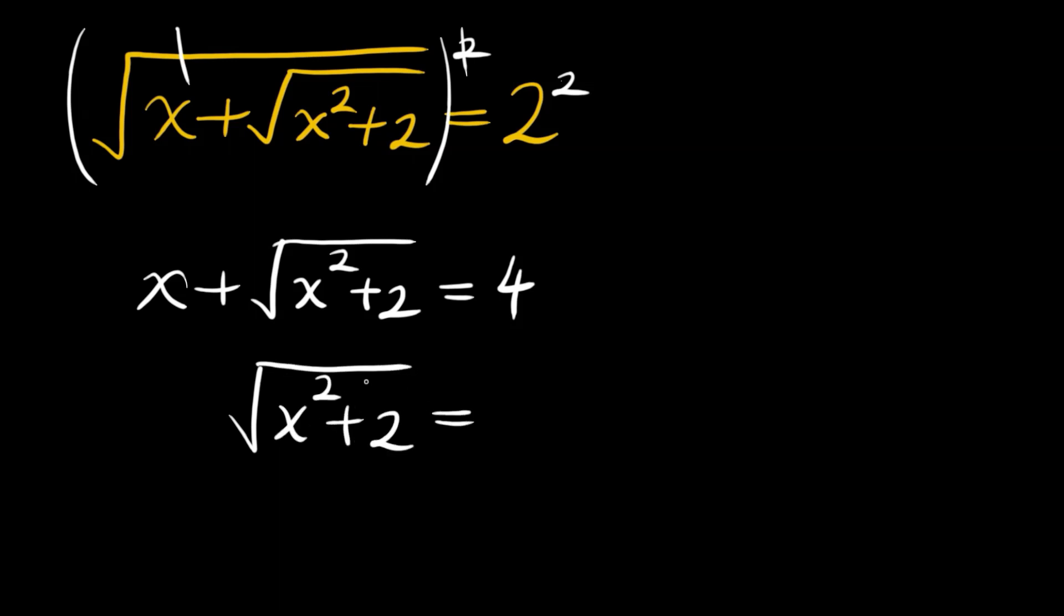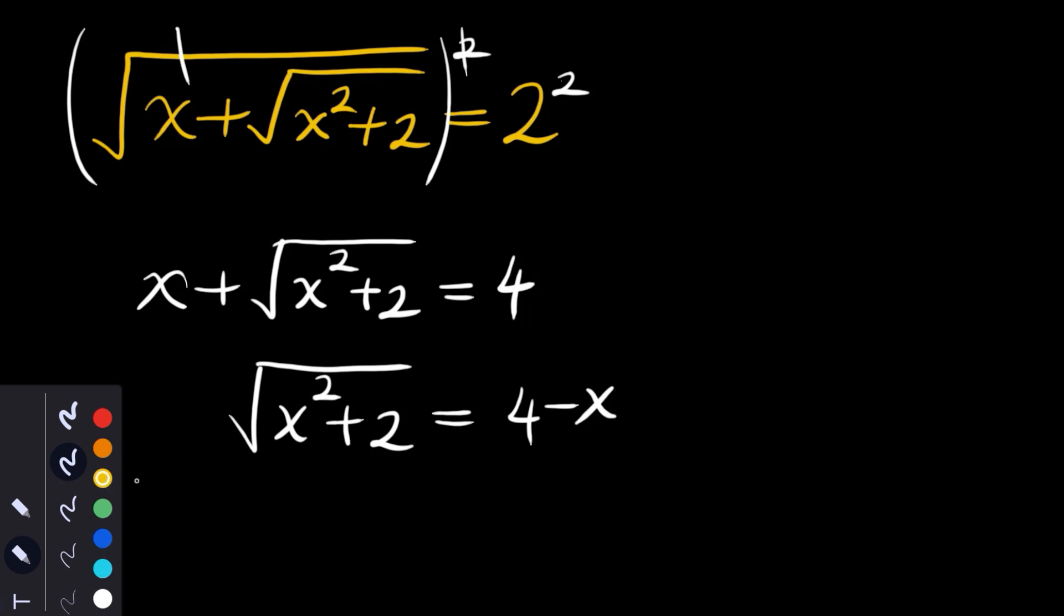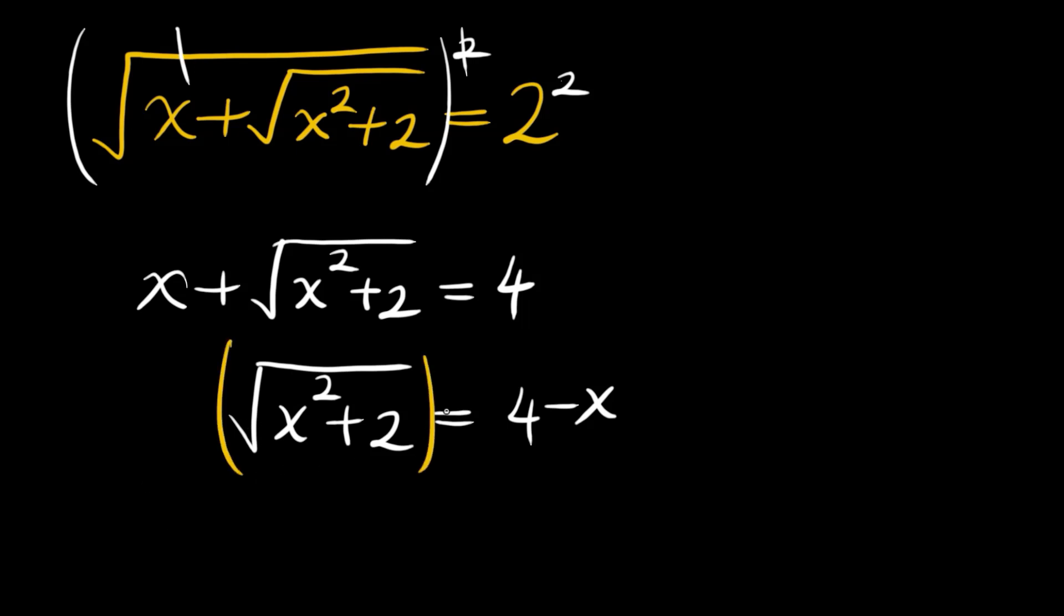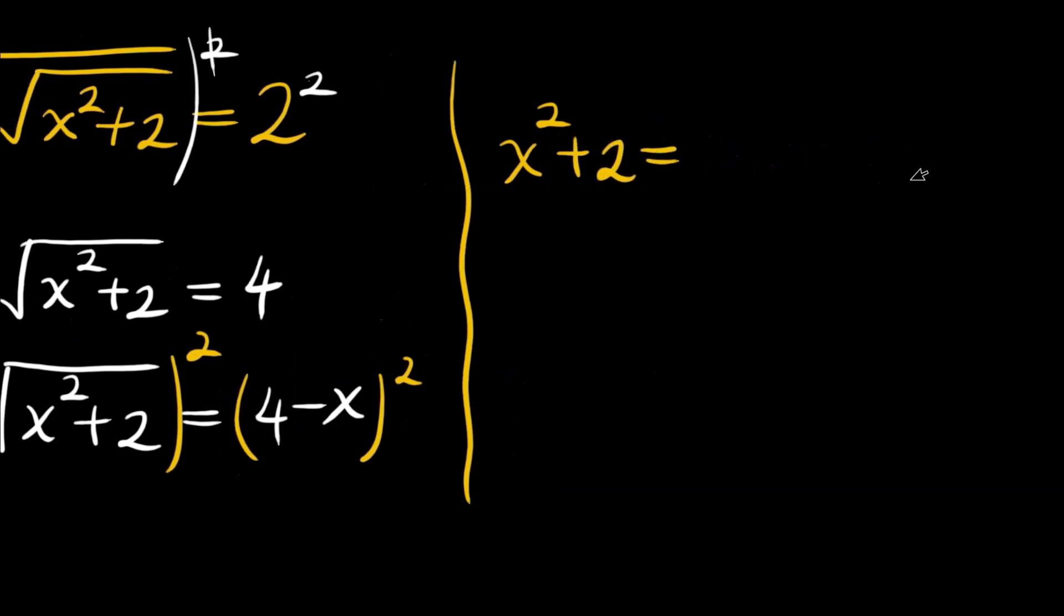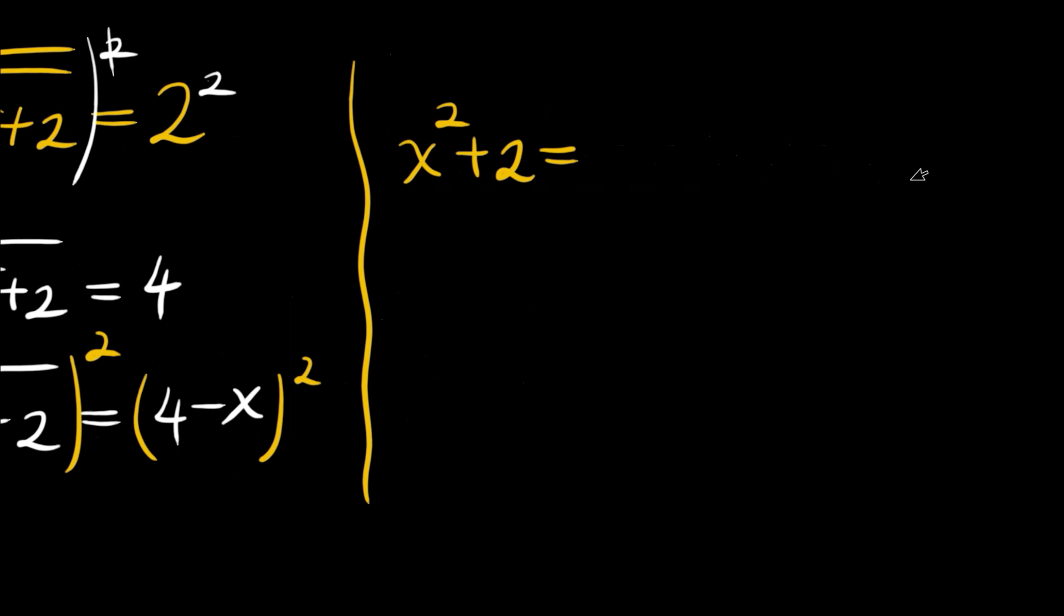Then we will have x squared plus 2 equals 4 minus x, all squared. This equals 16 minus 8x plus x squared.